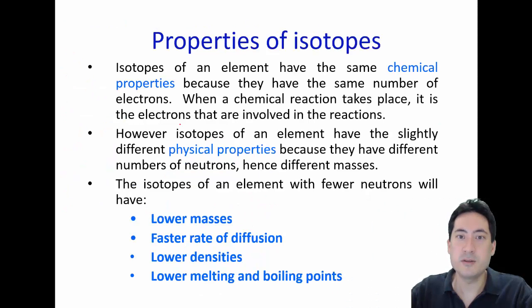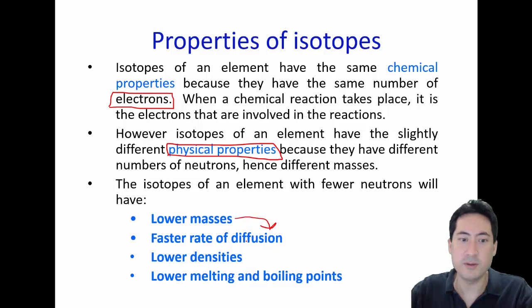Because the only difference is these neutral particles stuck in the nucleus, the chemical properties are exactly the same because the chemical properties depend on the electrons and interactions of the electrons. So the chemical properties are the same, but the physical properties are slightly different. Because they're different masses, they're going to move at different rates. So the diffusions are going to be different, the densities, of course, because there's more mass and the volume it takes up is not going to change. So it's going to have a different density. And lower melting and boiling points are going to occur because it is heavier, so it's not going to be able to move off into a gas as easily.